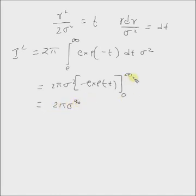So once you insert infinity, exponential of minus t we get 0, and when we set 0 in place of t we get 1, so it is minus of minus 1.